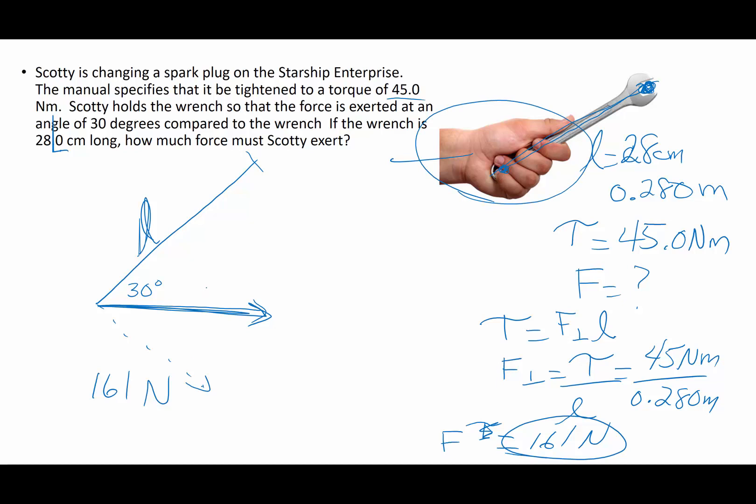So this is my hypotenuse. That's what I want to find, the true force, the hand force. If this is 30 degrees, that's going to be 60. I'm going to make a right triangle out of this. The 161 is my adjacent side. My force applied is my hypotenuse. And I want to find my hypotenuse.